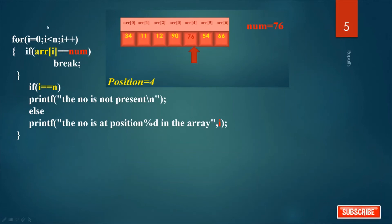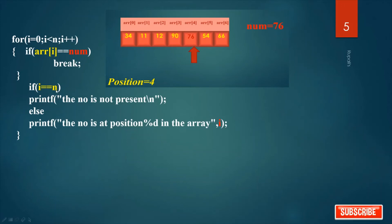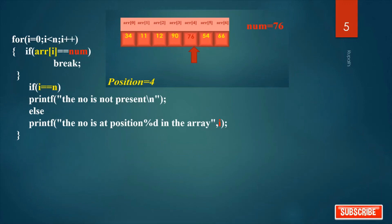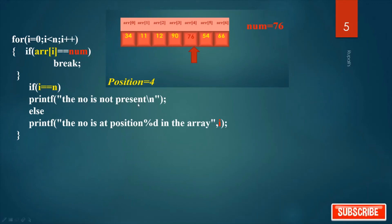In that case, execute the next line after the for loop. If i equals n, n is 7, and after executing the whole loop the value of i is also 7. So is i equal to n? Yes. Now I have already checked the whole for loop but I couldn't get our desired element. So you have to print: the number is not present. This is the logic for linear searching.